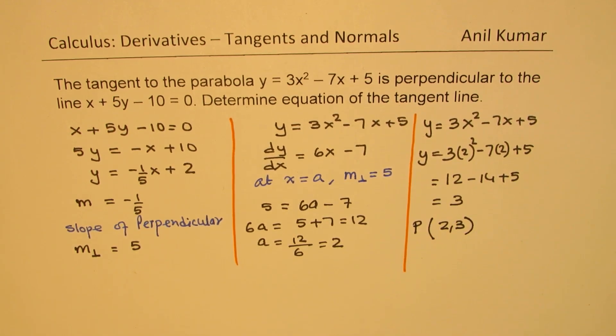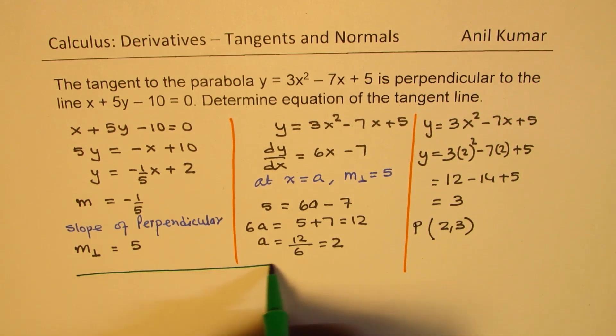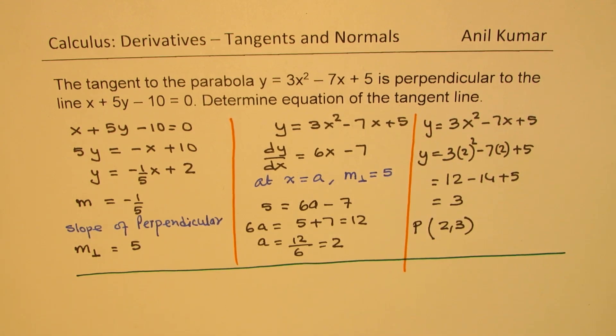So, what we get here is that the point at which the slope of the tangent line is perpendicular to the given line is 2, 3. So, now, we need to find the equation of the tangent line. So, let's find the equation of tangent line now.